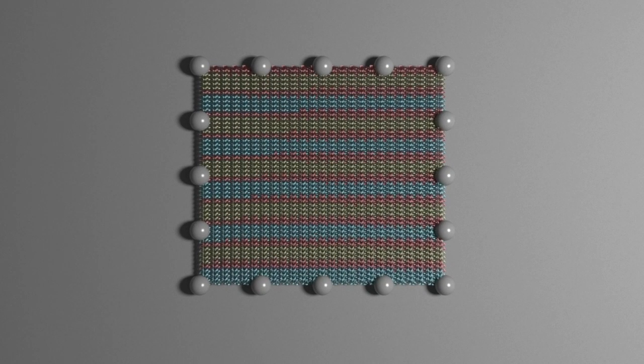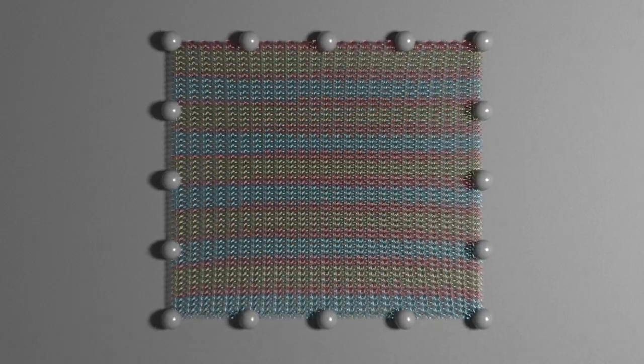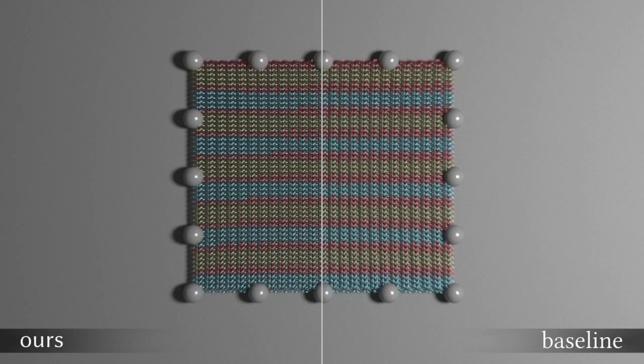We now show full fabrics modeled with our approach. This example shows a knitted fabric being stretched in all directions. Our technique captures the appearance change of this model driven by the thinning of yarns, an effect that cannot be reproduced by existing methods.